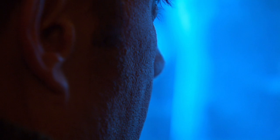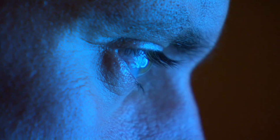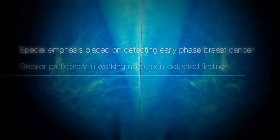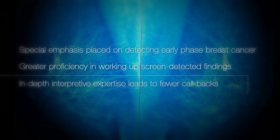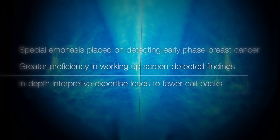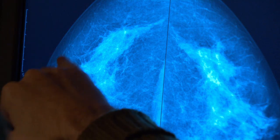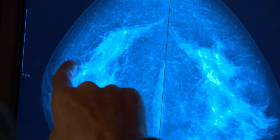The course places emphasis on how to find breast cancer in its earliest phase. You have to understand that the early phase of breast cancer sometimes, many times, doesn't show a very characteristic stellate appearance. There will be very subtle changes.